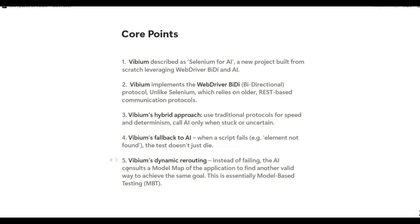Instead of failing, AI is going to consult a model map of the application to find another valid, alternative way to achieve the same goal. This is called model-based testing. The fifth point is Vibium's dynamic rerouting: whenever a traditional script fails, it looks to the AI, which looks at the model map of the application and finds an alternate route to achieve the goal.